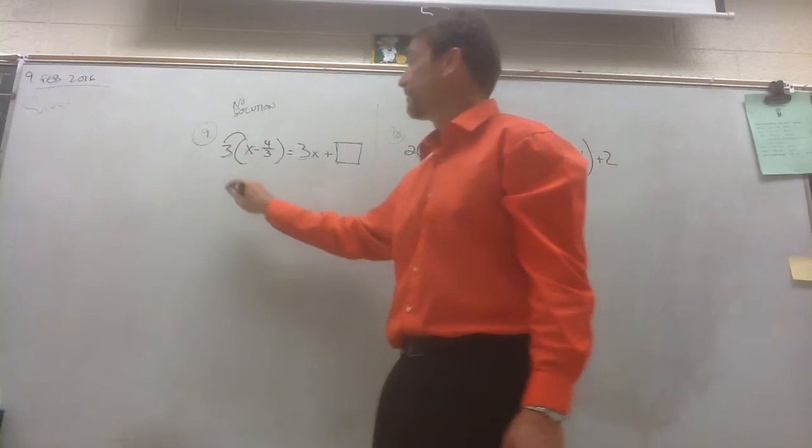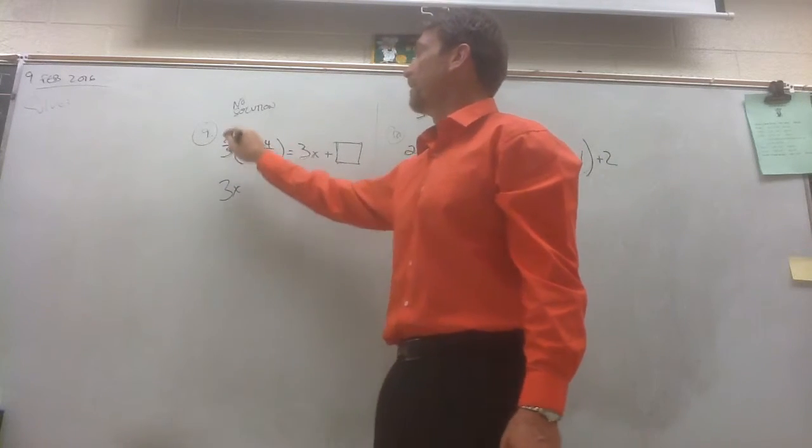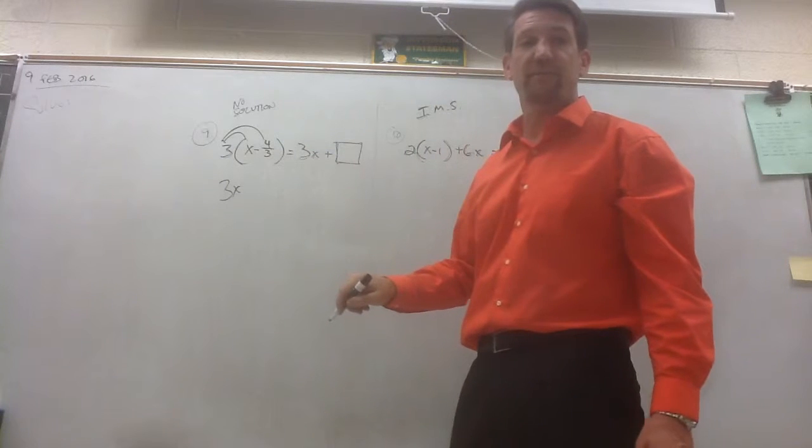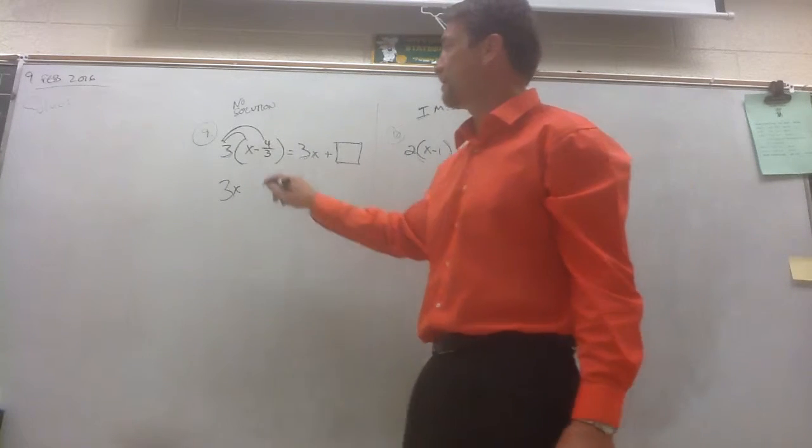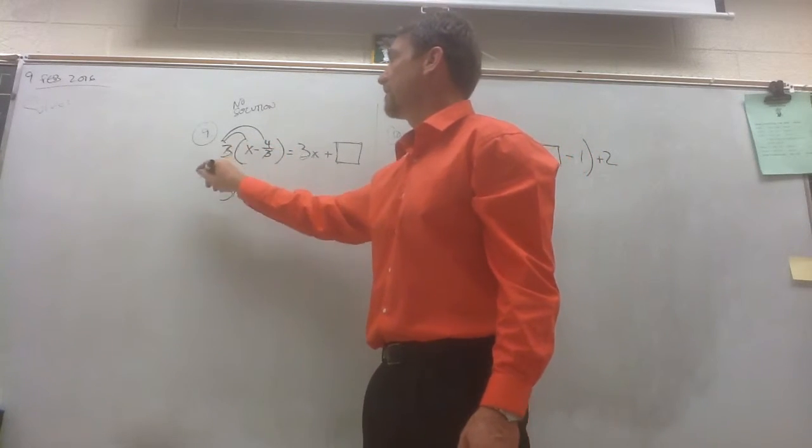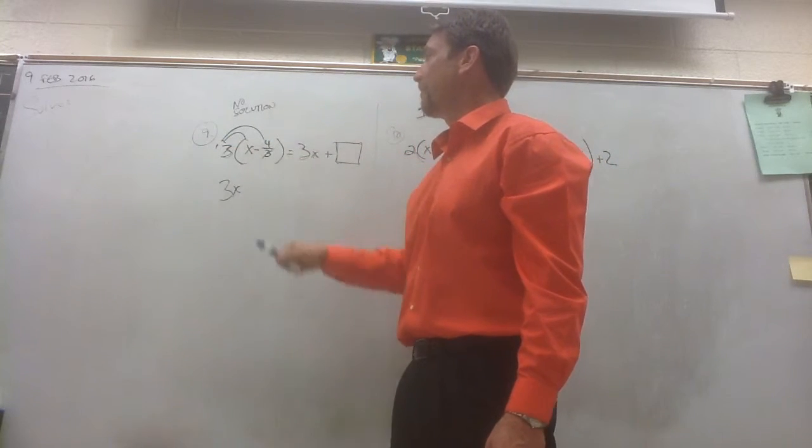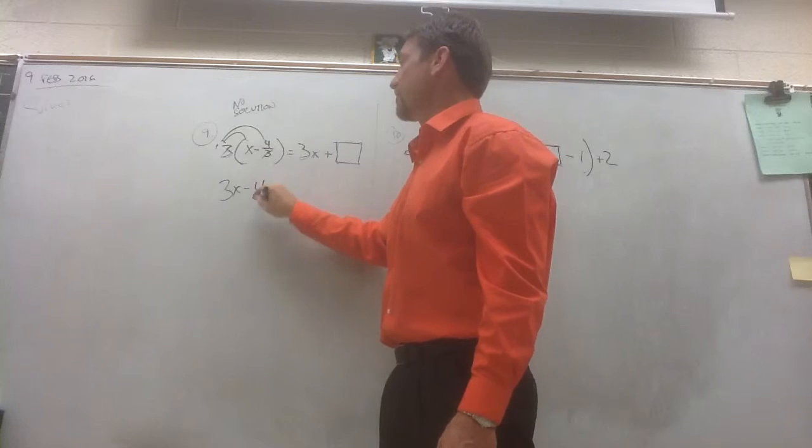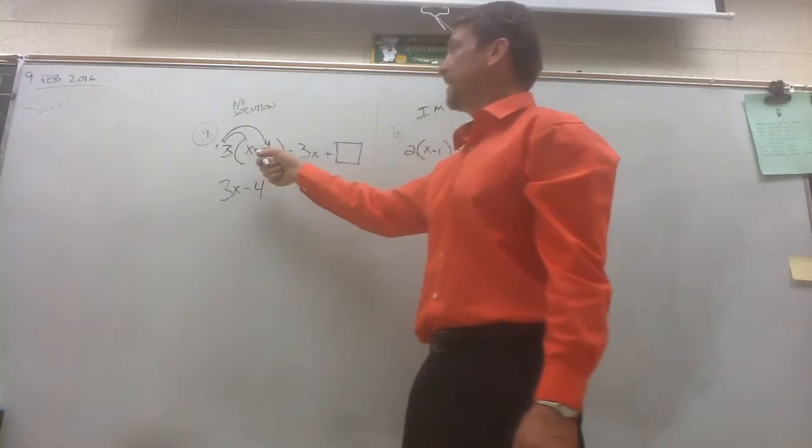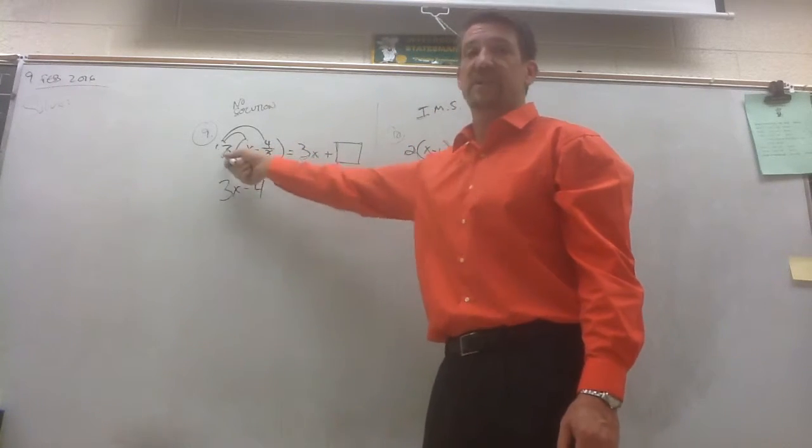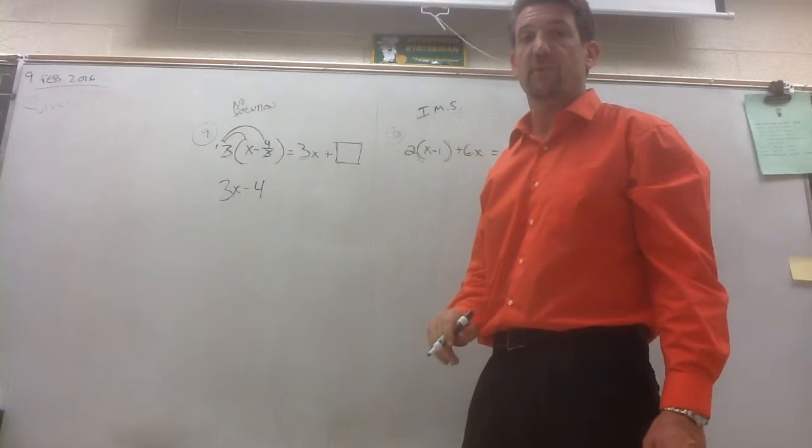3 times x gets you a 3x. 3 times negative 4 thirds. Simplify this before you multiply. 3 goes into 3 one time. And now you have 1 times negative 4. You just cleared your fraction. So the quantity x minus 4 thirds times 3 gets you 3x minus 4.